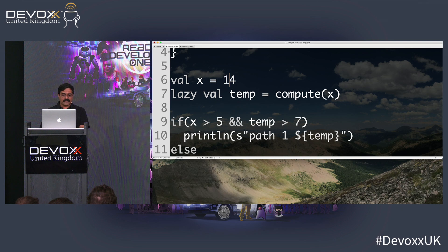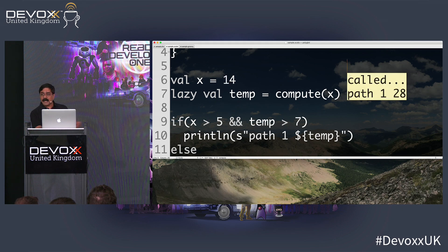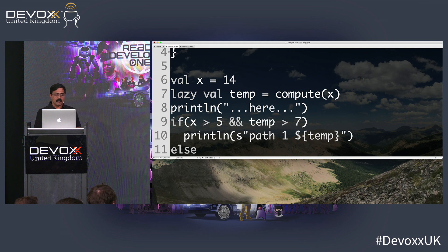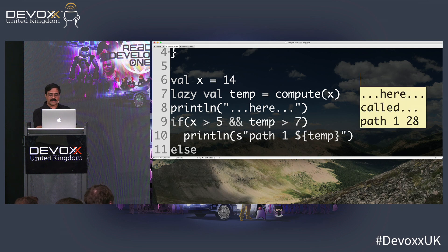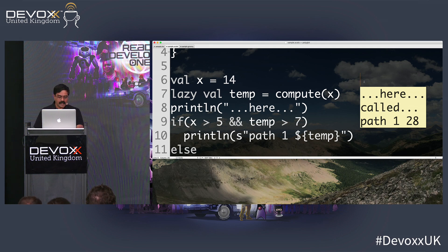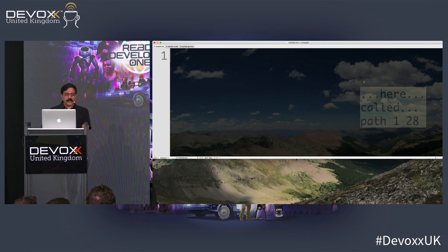I can see that it calls compute not on the line where temp is declared, but really on the line where temp is used — so it defers evaluation until a later time. That's lazy evaluation in Scala. On the other hand, let's go to Kotlin.